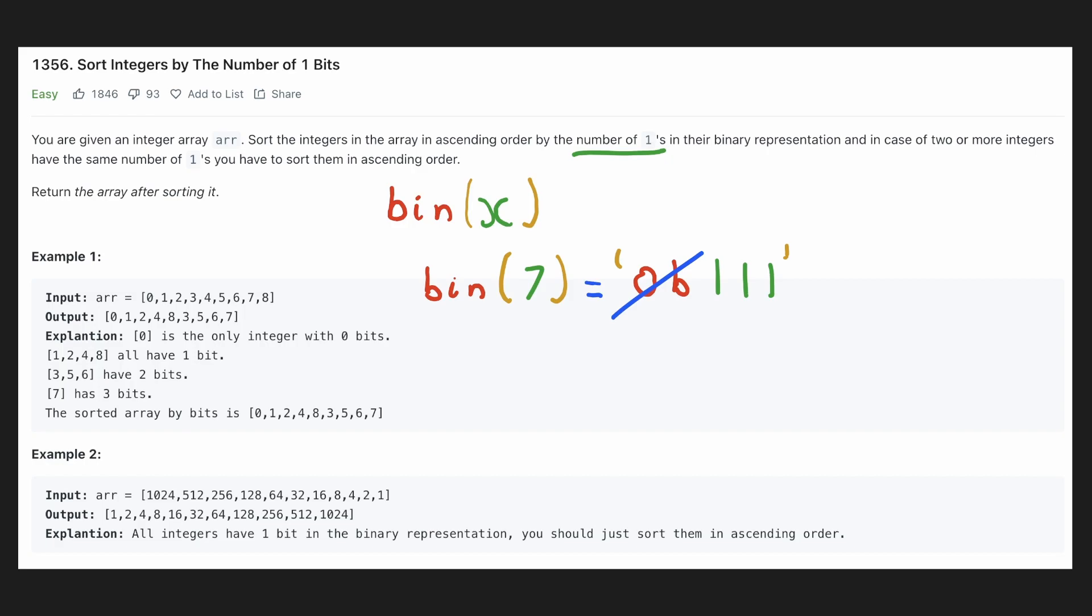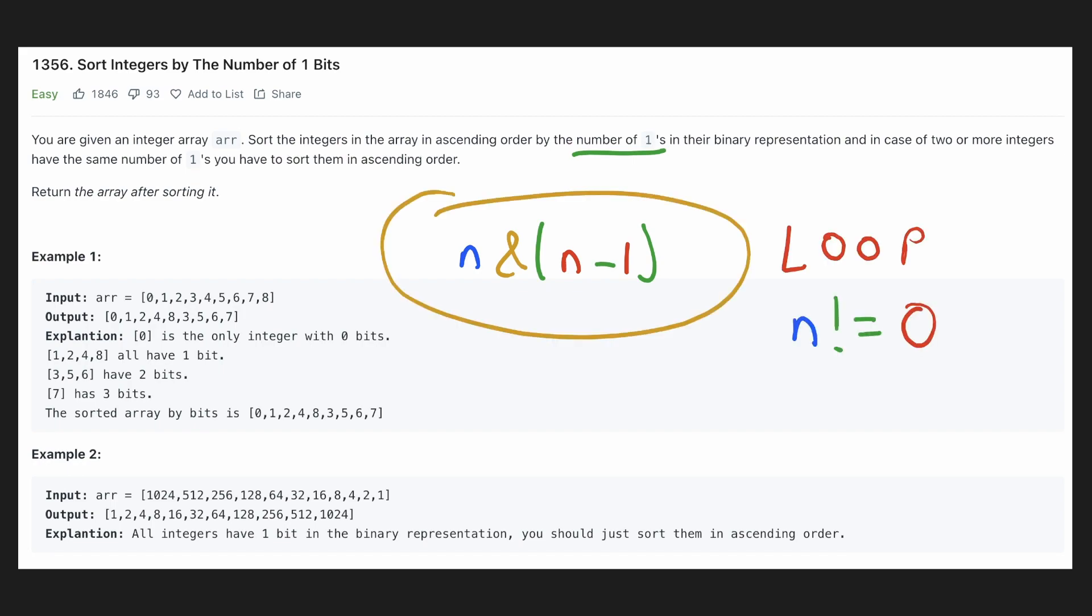Before using this binary function, you should first ask your interviewer if this is allowed or else you can use the second approach that we will see right now. In this approach, we will eliminate all the ones set in the original number. For that we will AND it with n-1 and then we will update our original number with this value and repeat this process in a loop till our number is not equal to 0.